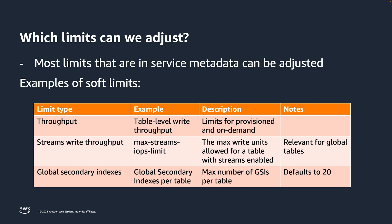Often, detailed explanations of how you will use the limits are required. For example, if you request an increase to the maximum number of tables in your account, expect many lengthy questions and understand your request may not be granted depending on your plans. Here are some limits that are very familiar to our customers. There is a throughput limit, which controls the maximum throughput for a table, whether it's in on-demand or provisioned. Then there's the streams write throughput limit, also known as the max streams IOPS limit, which controls the maximum write capacity a table with streams enabled can have — this limit often comes up with global tables. You can also have up to 20 GSIs by default, but if you'd like that increased, you can.